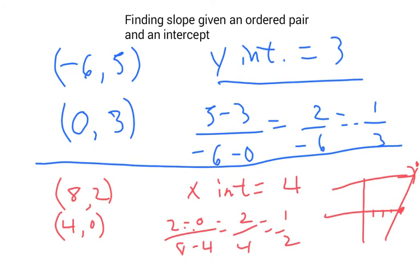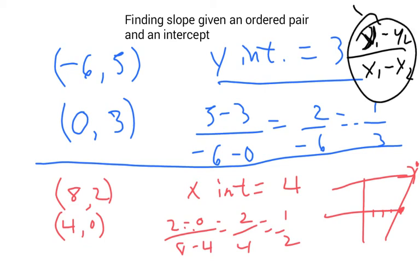That's how you figure out the slope given the ordered pair and an intercept. So given various kinds of information, you can always calculate the slope. But basically what you want to remember is y1 minus y2 rise over run. And if you have coordinates, you can just plug them into this very famous algebraic formula.